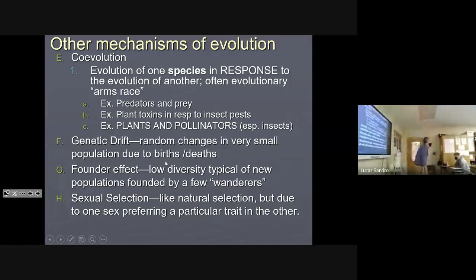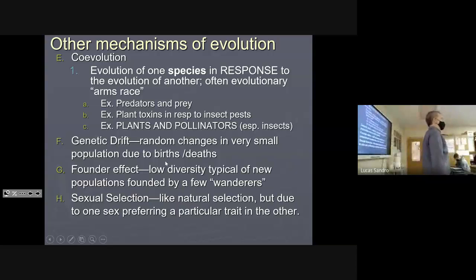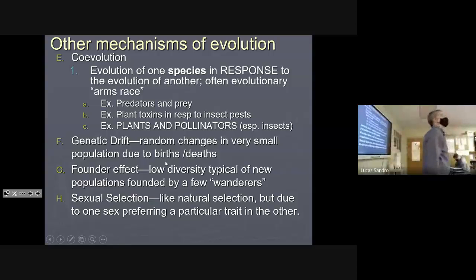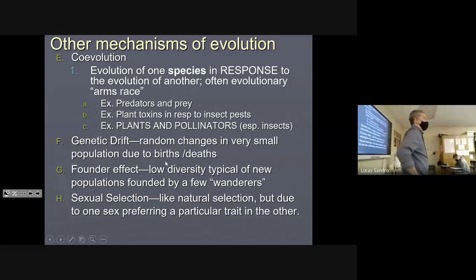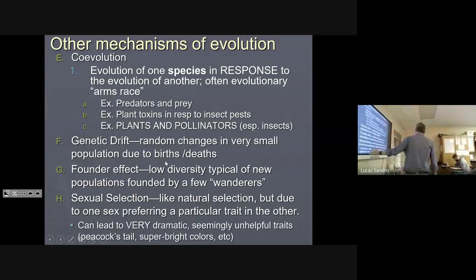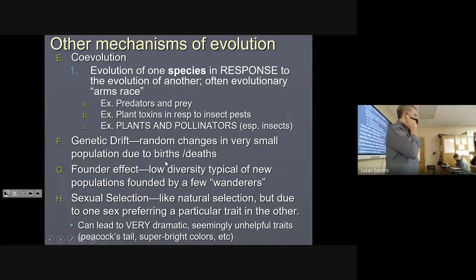How could being bright red ever help a male cardinal? Wouldn't that make them the easiest prey? Well, it's because the females prefer the reddest males. How could a peacock survive with that huge tail dragging around? Because the females prefer the showiest display. One way to look at it: if that cardinal survived being bright red, imagine how great all its other genes are. If you can drag a peacock tail around and still not get eaten, you're probably a pretty good male. It creates these weird runaway traits that seem unhelpful but, because they affect mate preference, they persist.